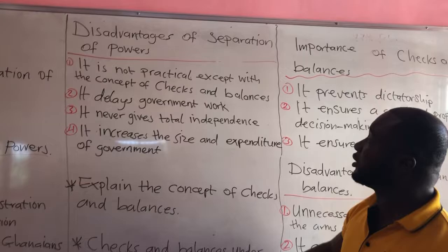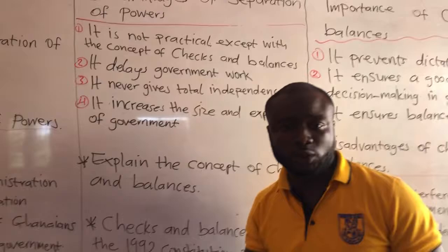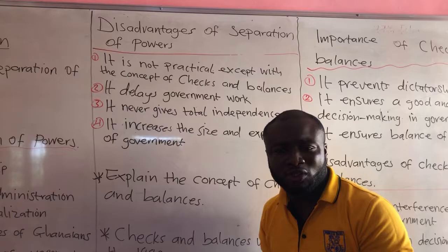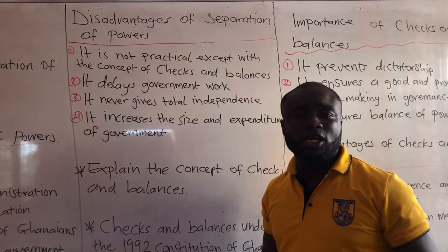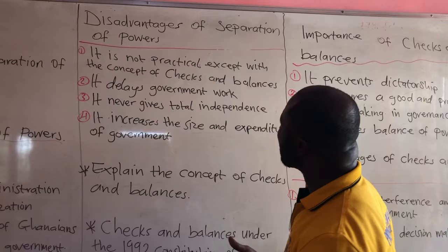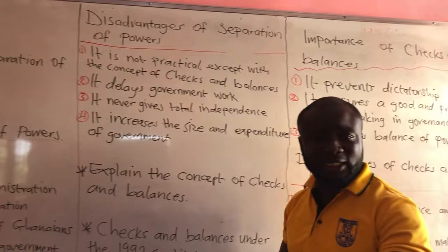Another disadvantage is that it delays government work. For example, the judiciary is supposed to interpret the constitution and our laws, but the laws are made by the legislature or parliament. So there is going to be a delay in government work. Similarly, the executive prepares the national budget but needs approval from parliament or the legislature, which also causes delays.